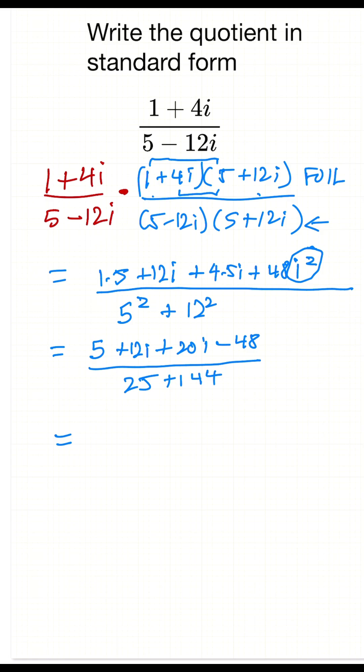So now we can break this down even further. Let's combine the 5 and the minus 48, so that's minus 43. That's going to be our real part.